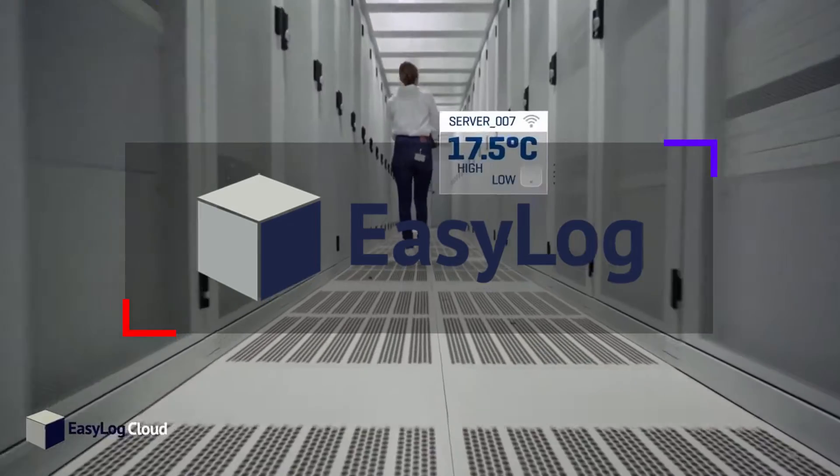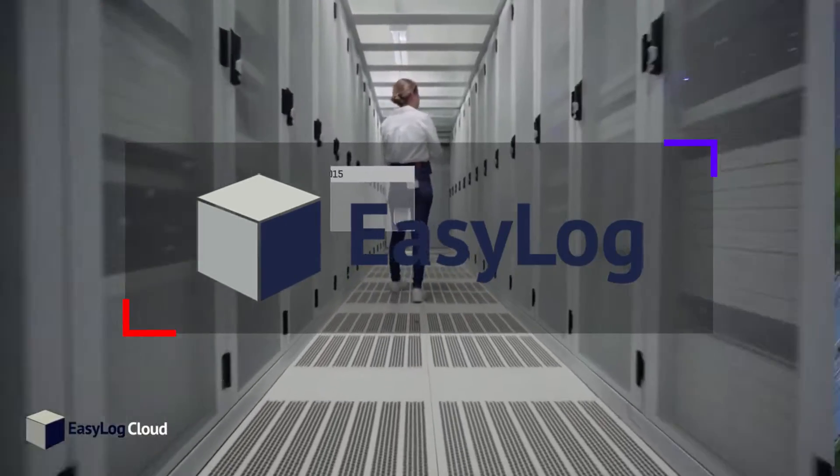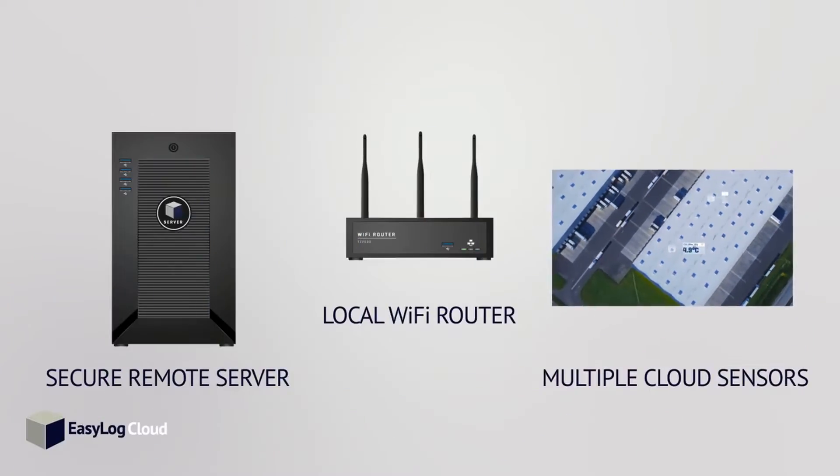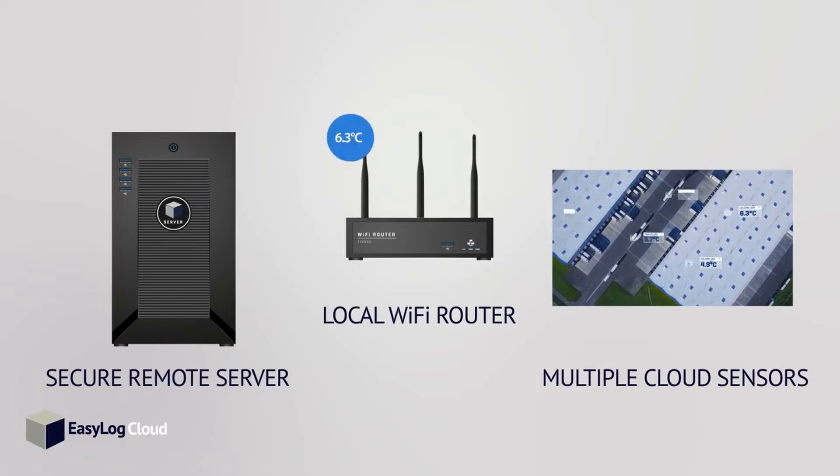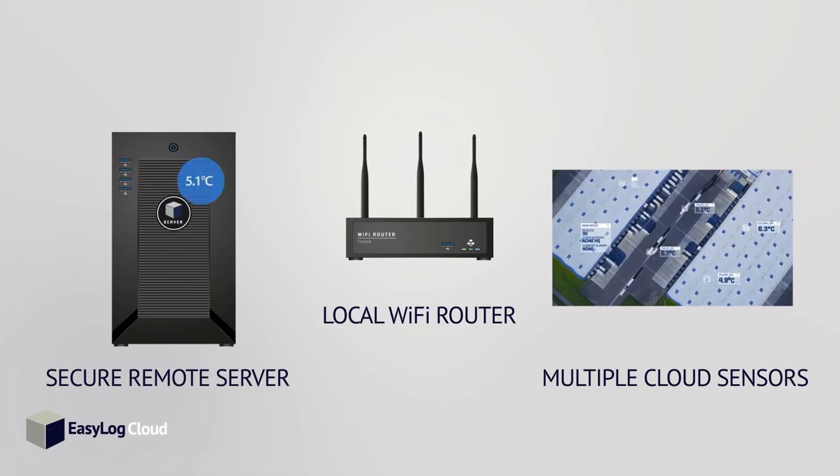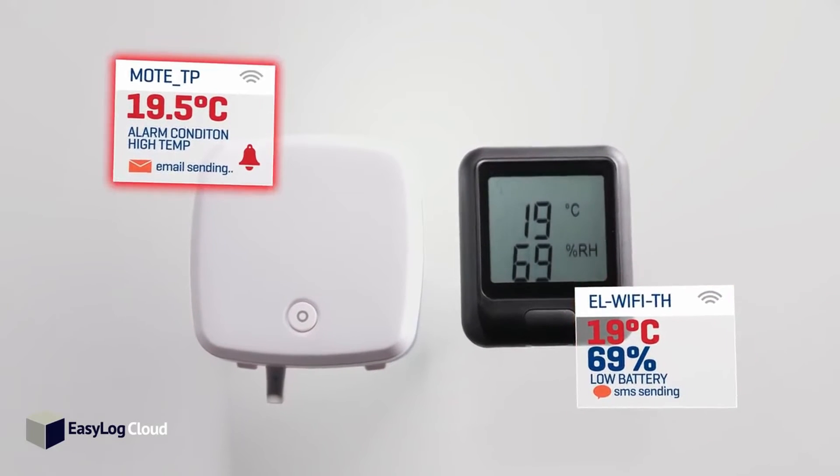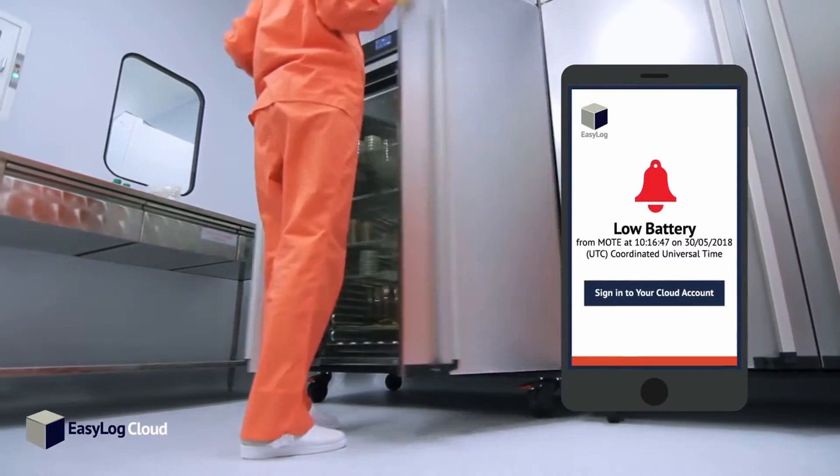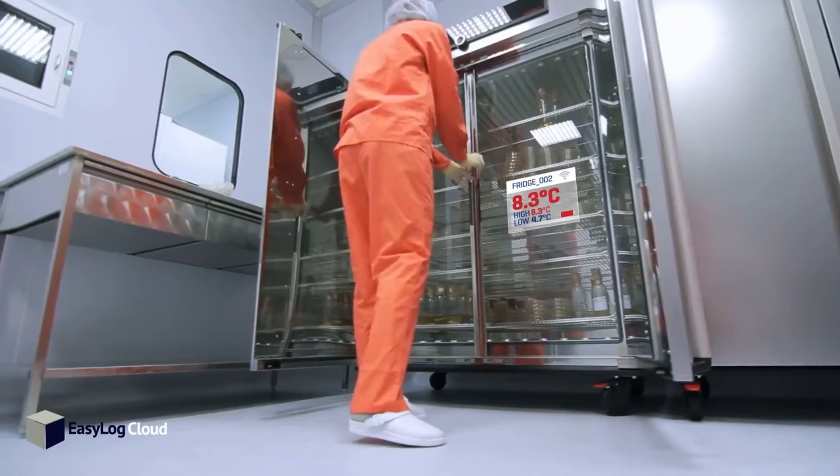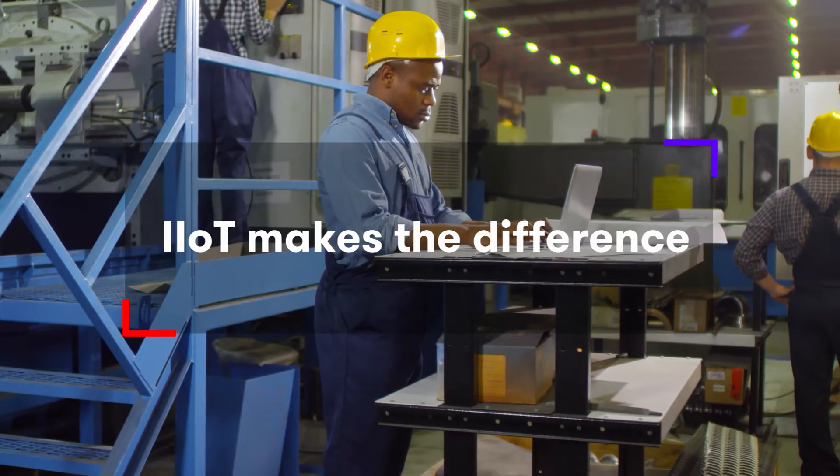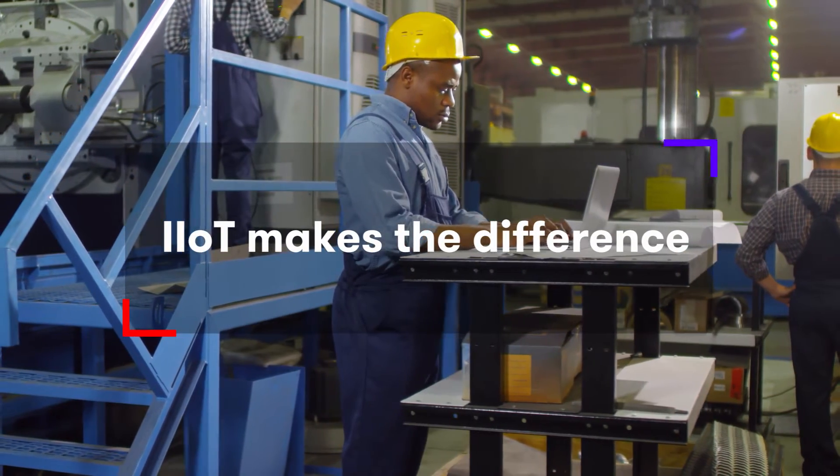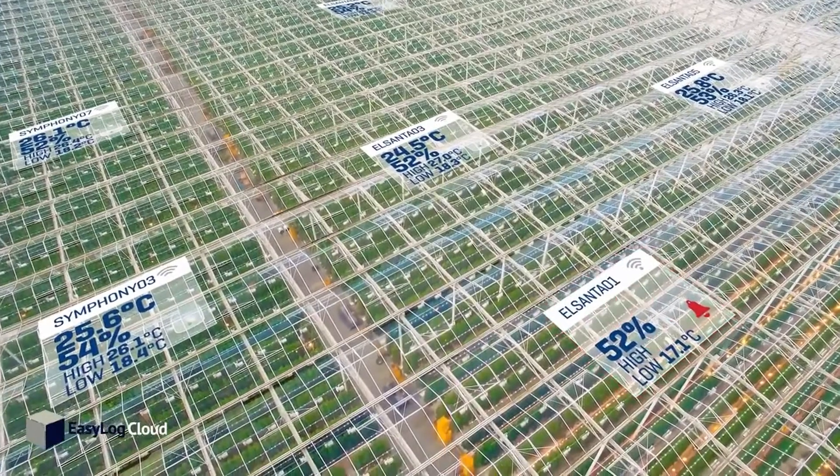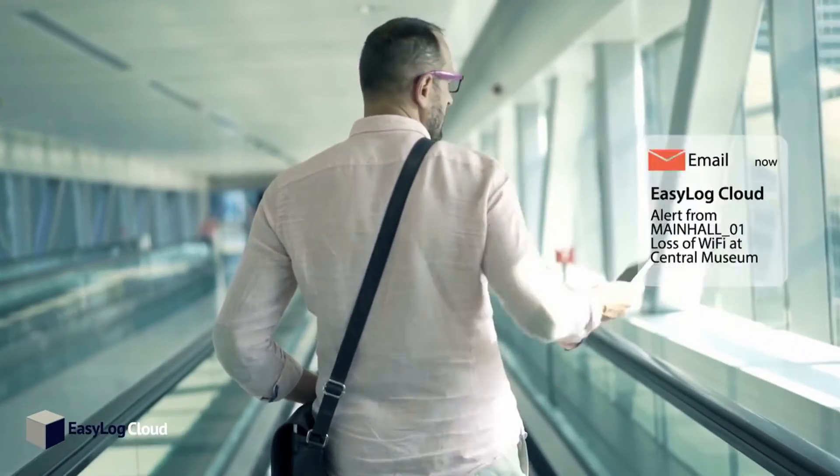A different example are Lascar EasyLog data loggers which can be permanently installed and relay measurements made to the cloud via Wi-Fi. Monitoring temperature, software can be programmed to send alerts to relevant staff if conditions change and action is required. IoT technology enables this hardware to deliver better informed decisions made at the right time to keep the plant running and reduce everyone's blood pressure.